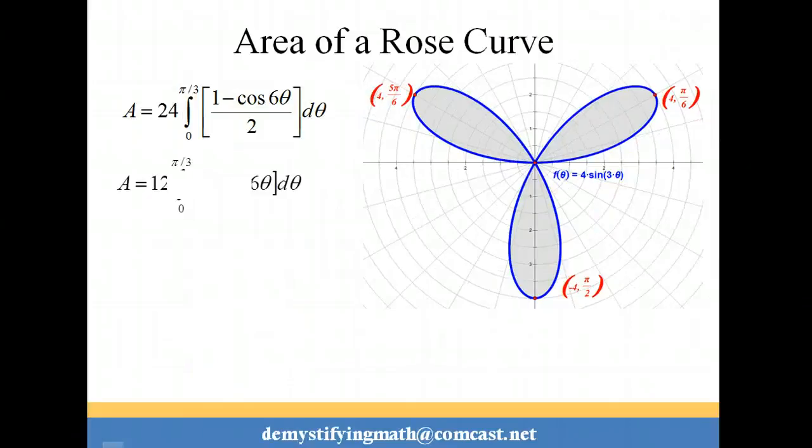Okay, so I'm going to bring the 2 out in front. So I have 12 times the integral of 1 minus cosine 6 theta, and I'm ready to integrate.